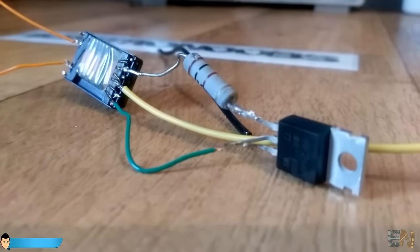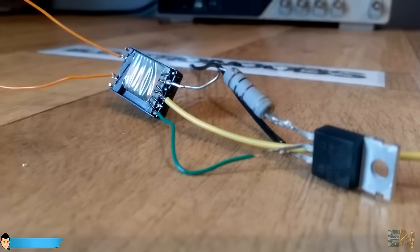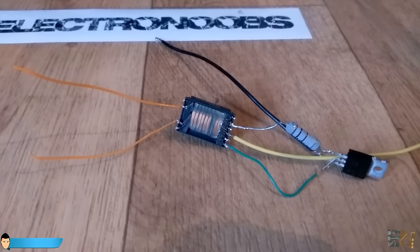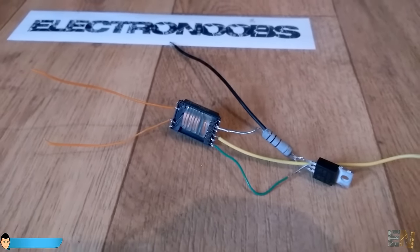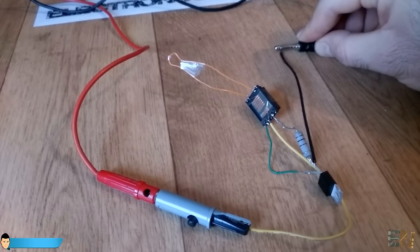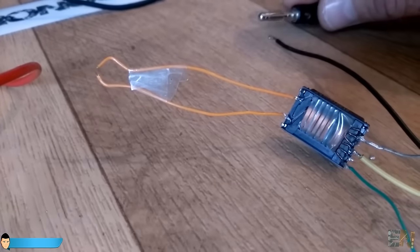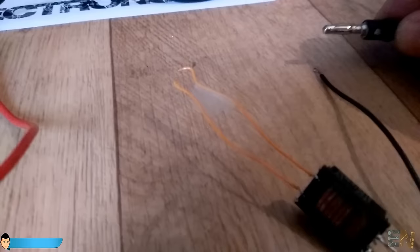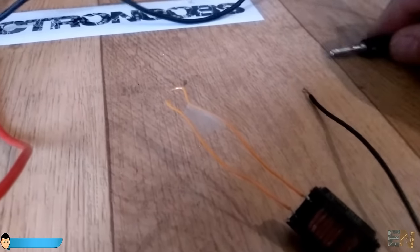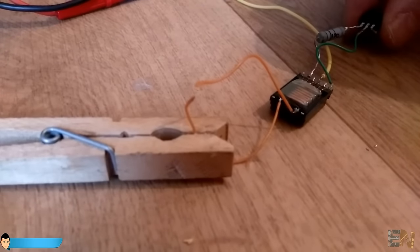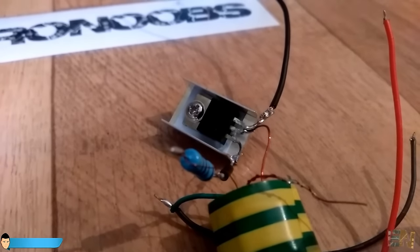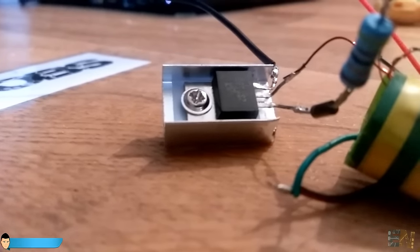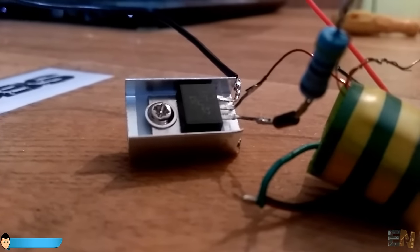The common wire which is the middle one is positive. Supply around 5V to the input and test it out. As you can see there is our plasma arc. This circuit draws a lot of current so you should use a powerful power supply or maybe directly a LiPo battery. If the circuit is not working it could be because of the low current. So this transformer and this circuit works as well.